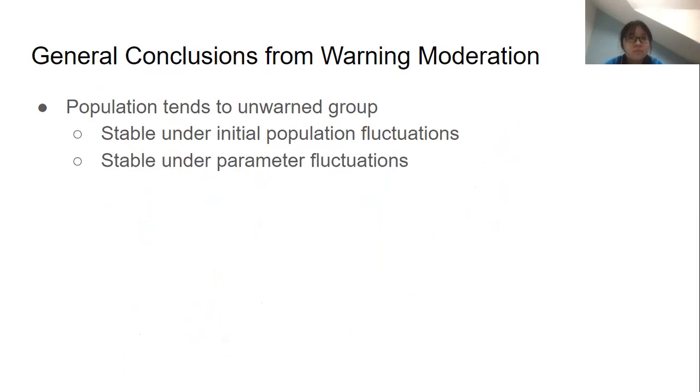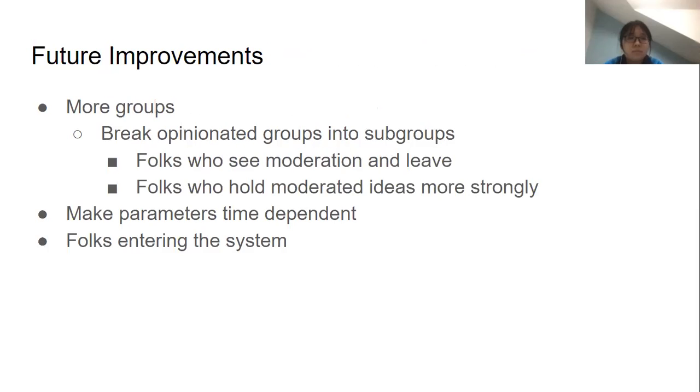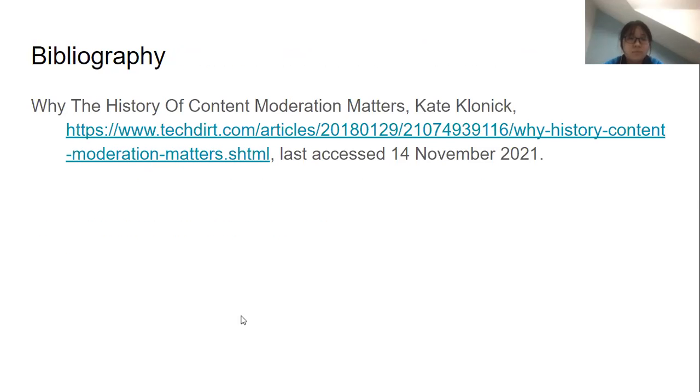General conclusions from warning moderation is that similarly to censorship, the population tends to join the unwarned group or groups, and this is stable under initial population fluctuations and under fluctuations in the parameters. In the future we could make larger groups to capture different gradations of opinions or break up opinionated groups into subgroups. We could also make the parameters time dependent and account for folks entering and leaving the system. Thank you for listening to our presentation and here's a bibliography.